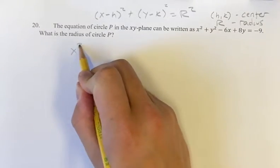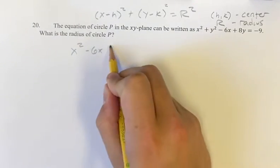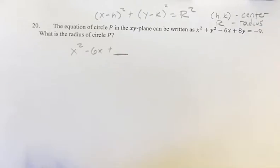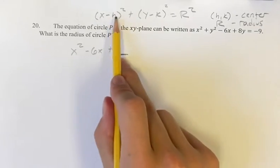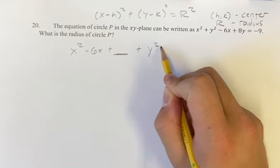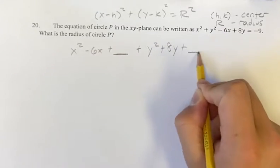So on this side of the equation, you have x squared minus 6x plus some value, and that's going to be equal to x minus h squared, plus y squared plus 8y, plus another value.